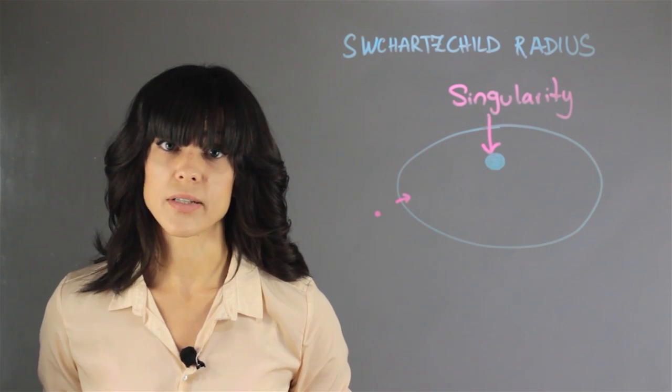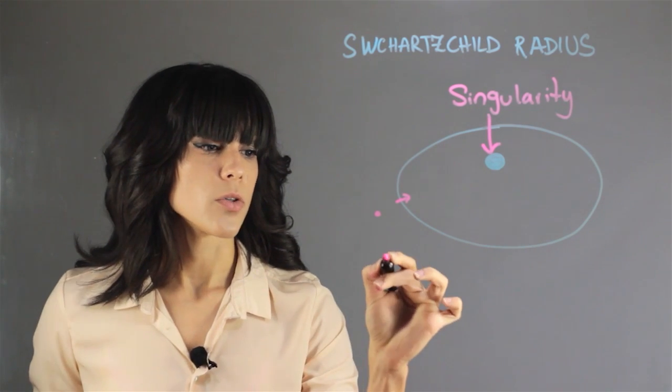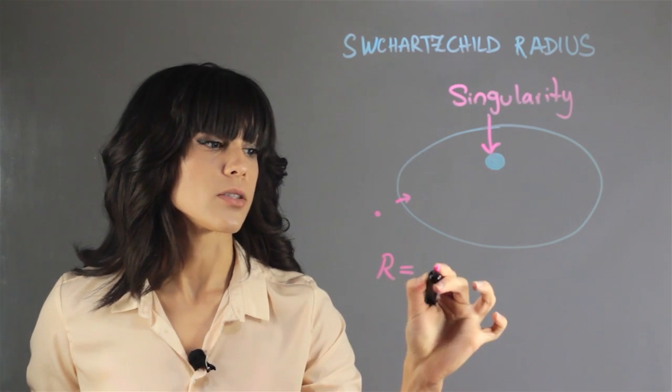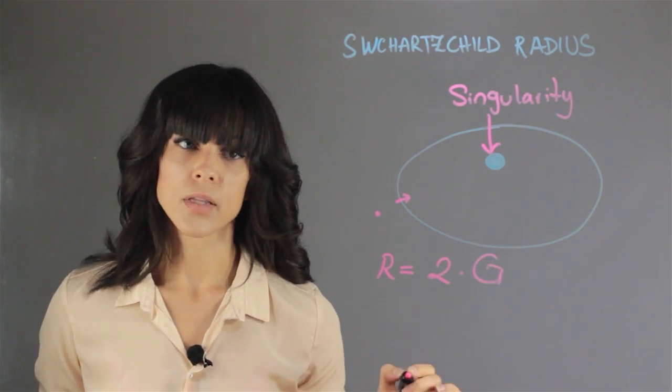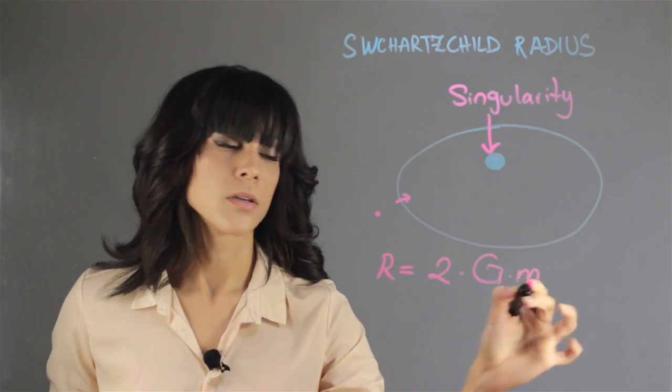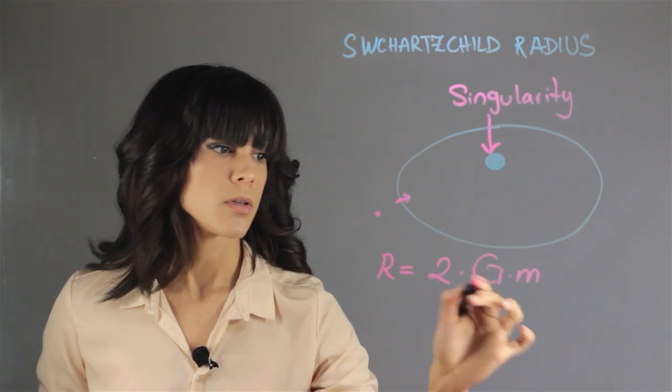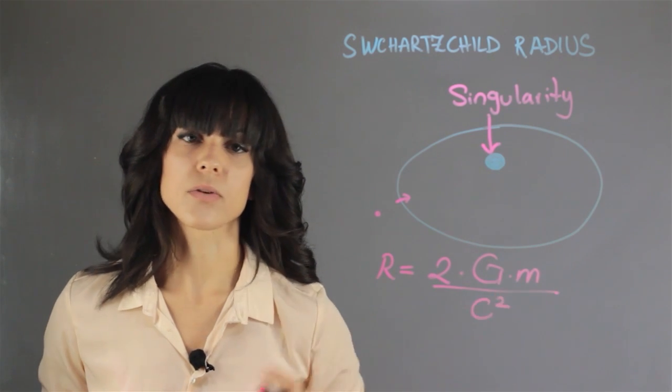How do we determine this radius? So the radius has an equation: 2 times the gravitational constant G times the mass of the black hole divided by the speed of light squared.